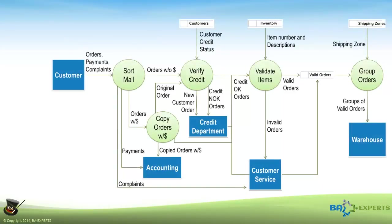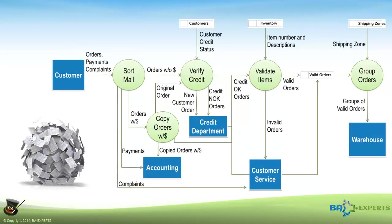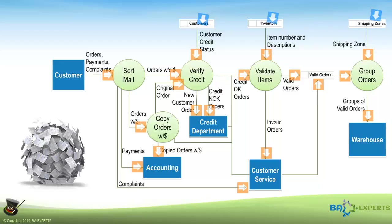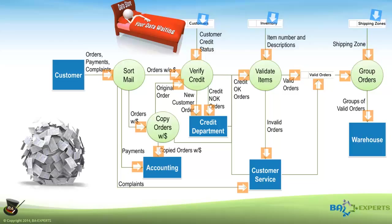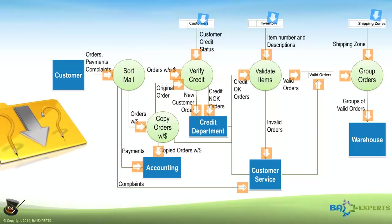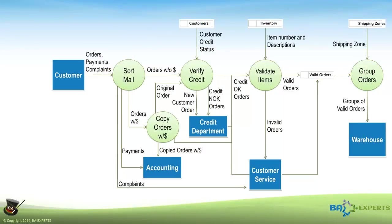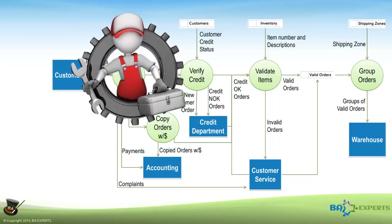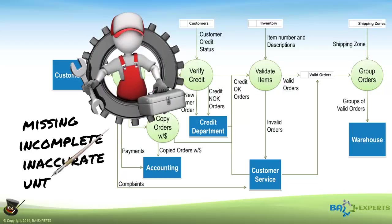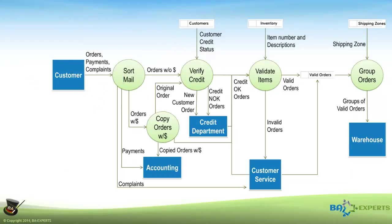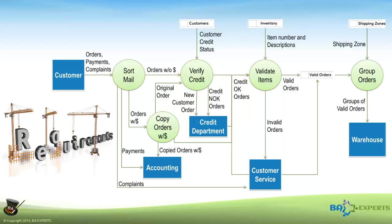The other component of a data flow diagram is the data. Recognize that every arrow on a data flow diagram represents data flowing from somewhere to somewhere, and every data store represents data at rest. At the lowest level of detail, you need to understand exactly what data is contained within each data flow and in each data store. Very often, problems in a process are caused by missing, incomplete, inaccurate, or untimely data.